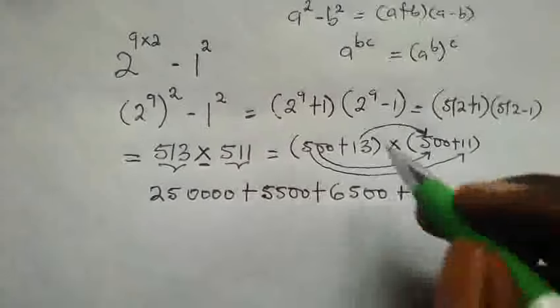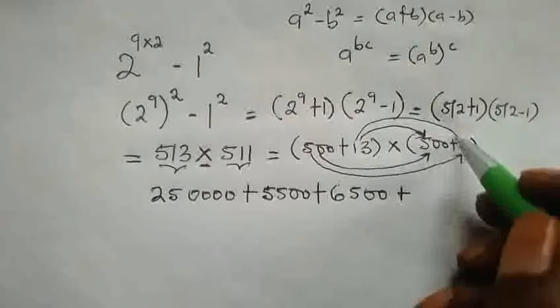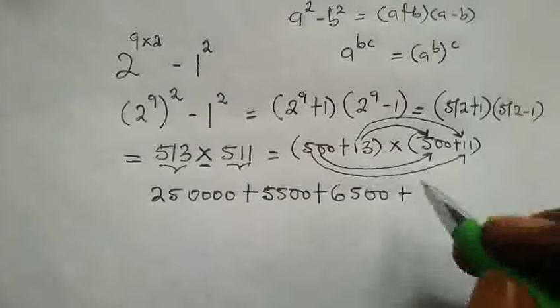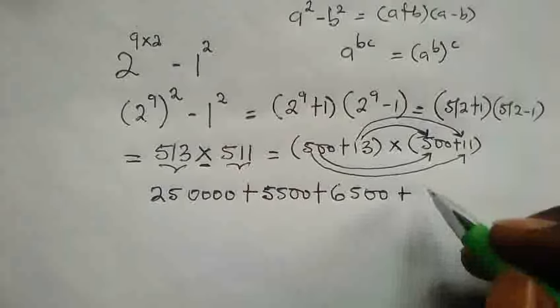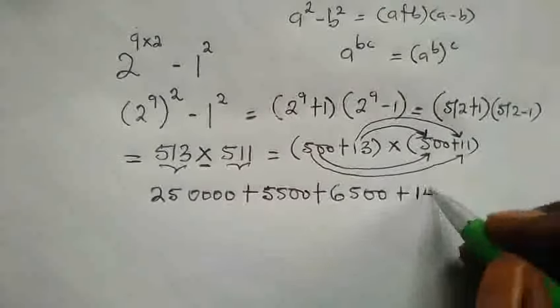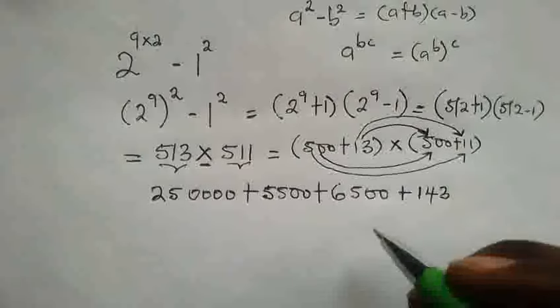And plus then this 13 multiply the second number over here. So we have 13 times 11 and that gives us 143.